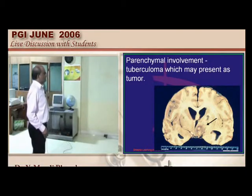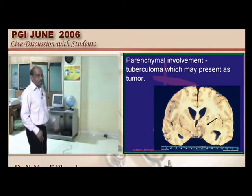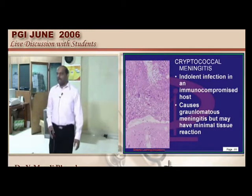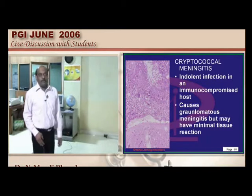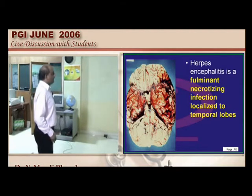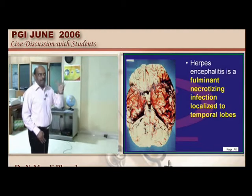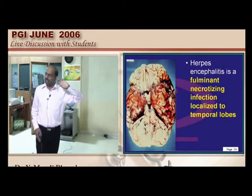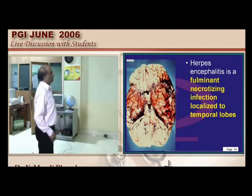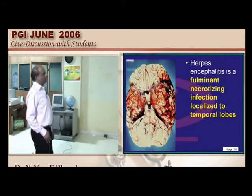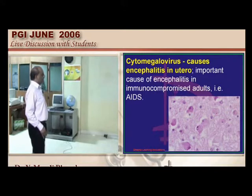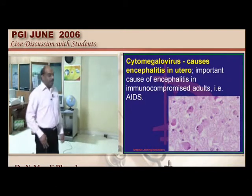Tuberculoma can present as parenchymal involvement, mimicking a tumor. Cryptococcal meningitis has granulomatous meningitis as an important feature. Herpes encephalitis classically involves the temporal lobes, causing forgetfulness and dementia, with hemorrhagic necrotizing infection. CMV can cause encephalitis especially in immunocompromised individuals.